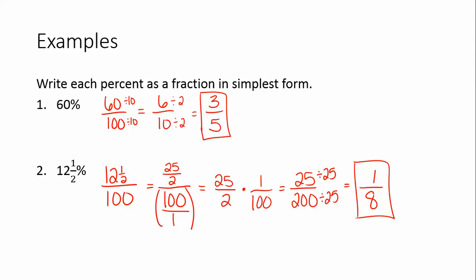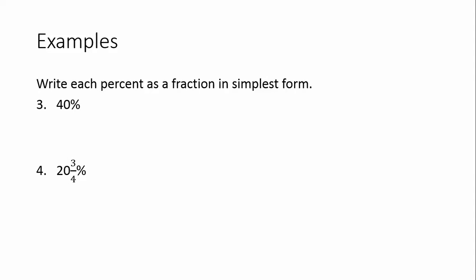So let's take a look how we did that again. We changed the 12 and a half to improper fraction. Then instead of dividing by 100, we multiplied by 1 one hundredth. Then we multiplied the fractions and then reduced. A couple more examples here. If you'd like to pause the video and try both of these on your own. So 40%, we write 40 over 100.